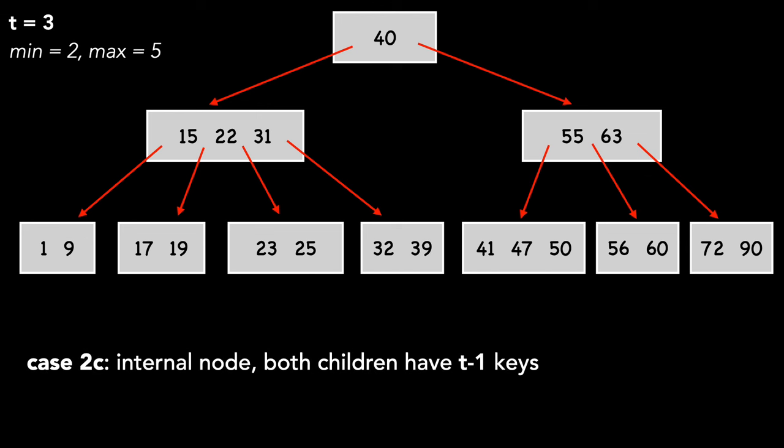Case 2c is where both children have T minus 1 keys, which is already the minimum. To demonstrate, let's delete key 22. We'll call the left child Y, and the right child Z. We move Z's keys into Y, as well as the key we're trying to delete, 22.